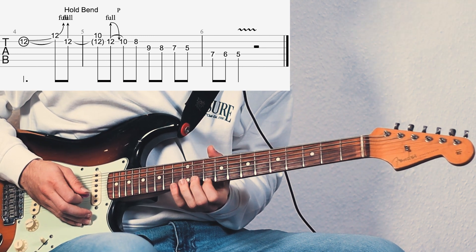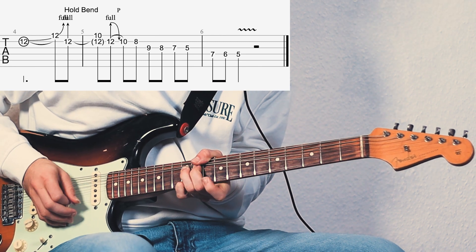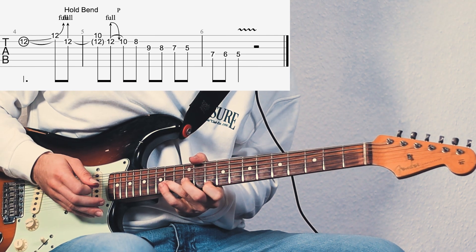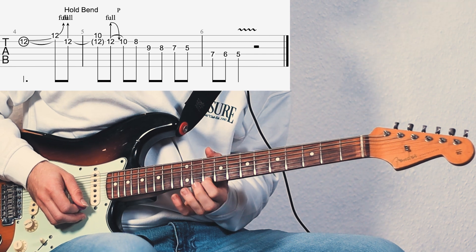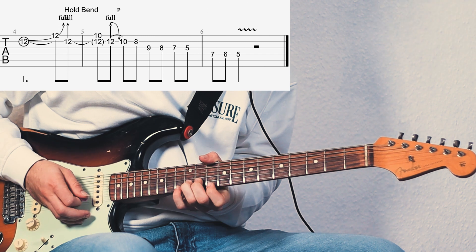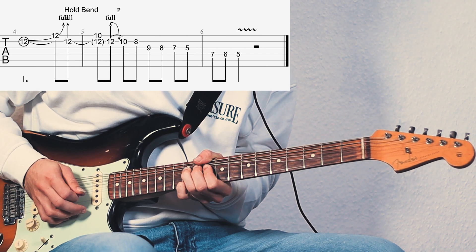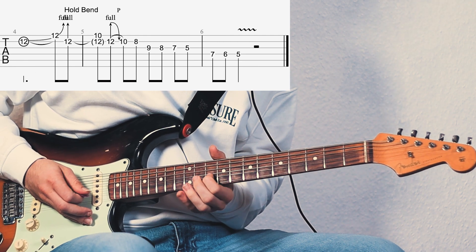And then we change the note which is ringing out underneath that bend to the 10th fret. So for a short second, the 14th fret of B string ringing out and the 10th fret of E string, then you pick again and come back down and play the A note here at the 10th fret of B string.